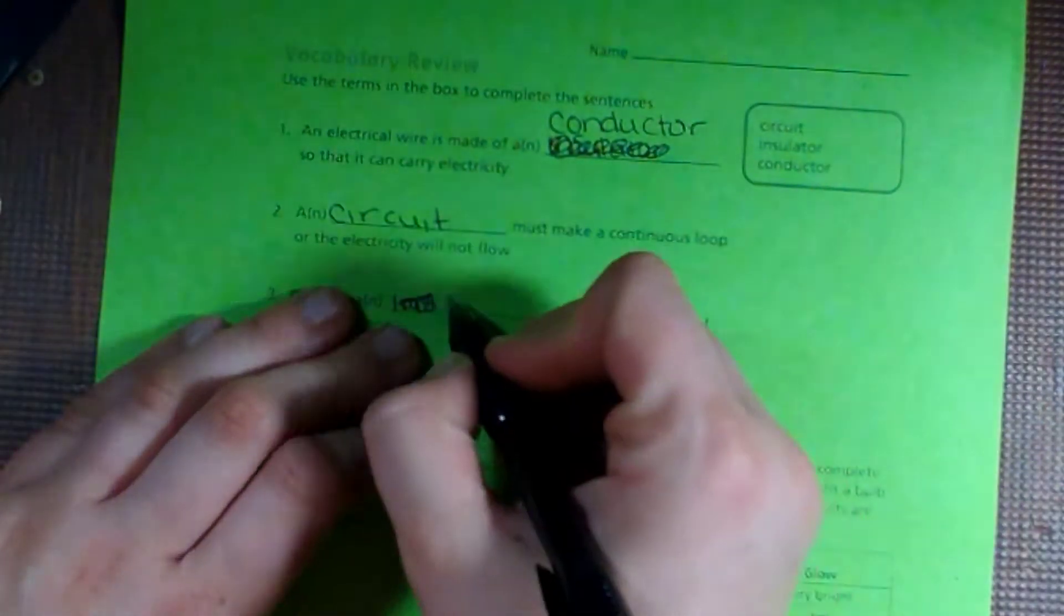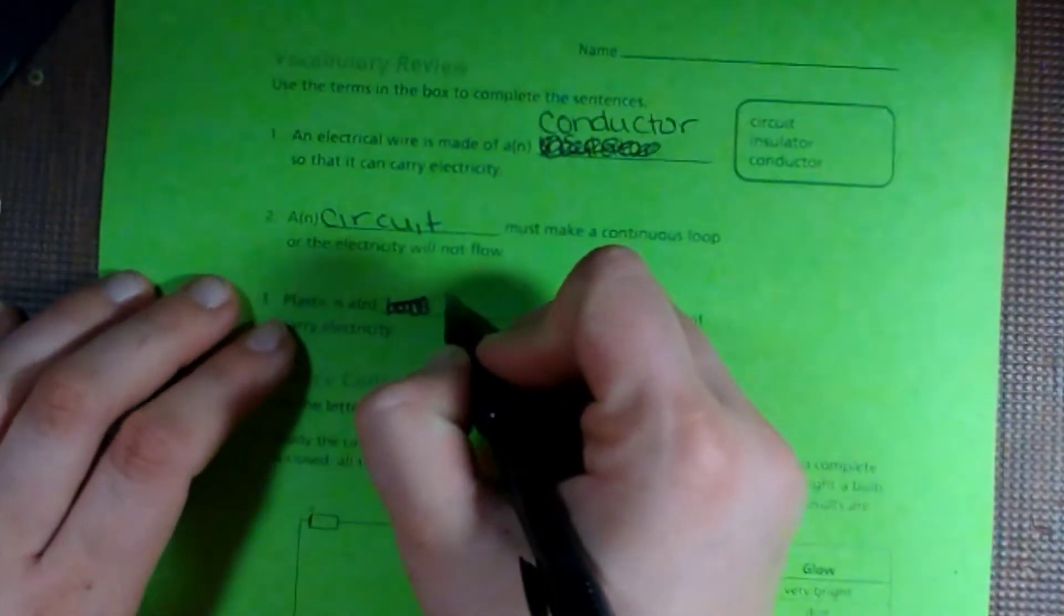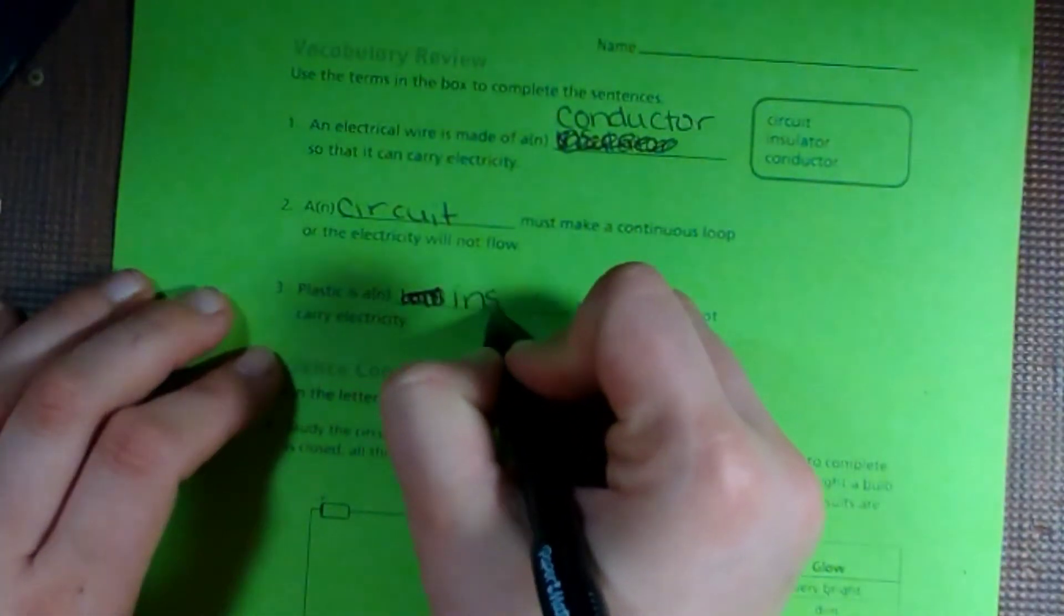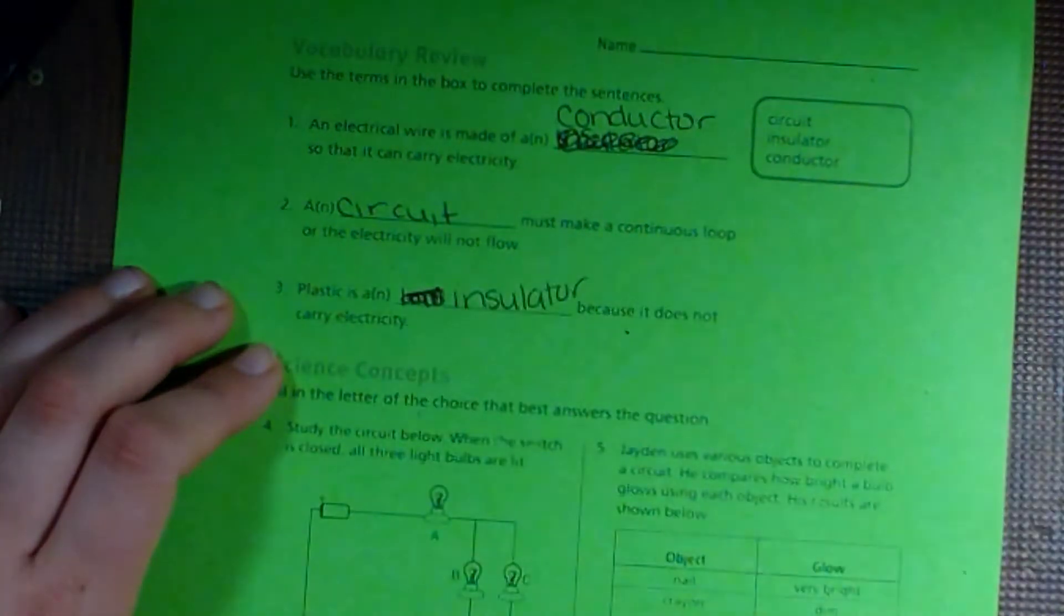A circuit must make a continuous loop or electricity will not flow. And plastic is an insulator because it cannot carry electricity.